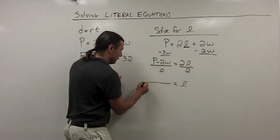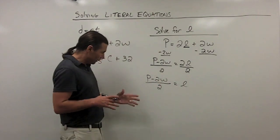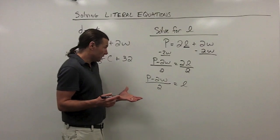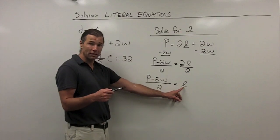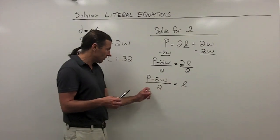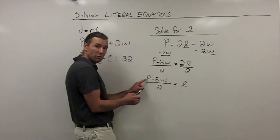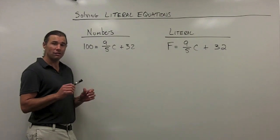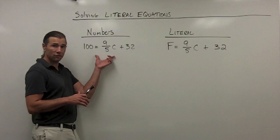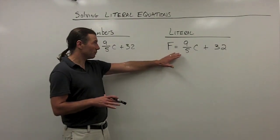The 2s divide out on the right side, leaving L all alone. On the left side I have the quantity P minus 2W all divided by 2. So L equals (P minus 2W) over 2. If I need to find the length of a rectangle given the perimeter and width, I just plug those values in, and it gives me the length. The key to solving literal equations is seeing the connection between solving with numbers and translating that to variables.